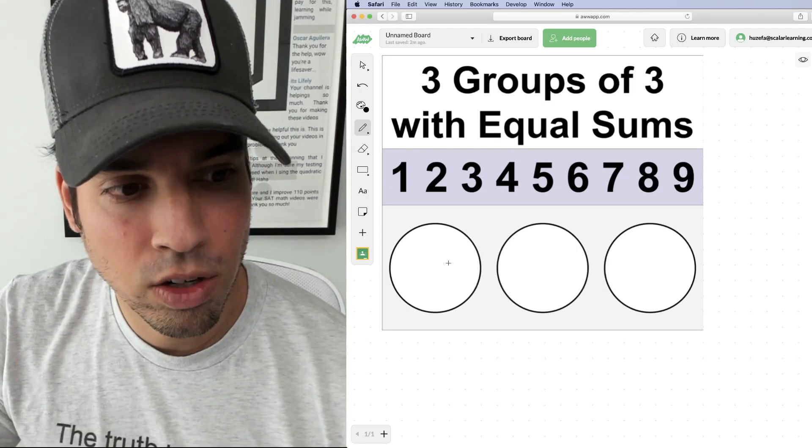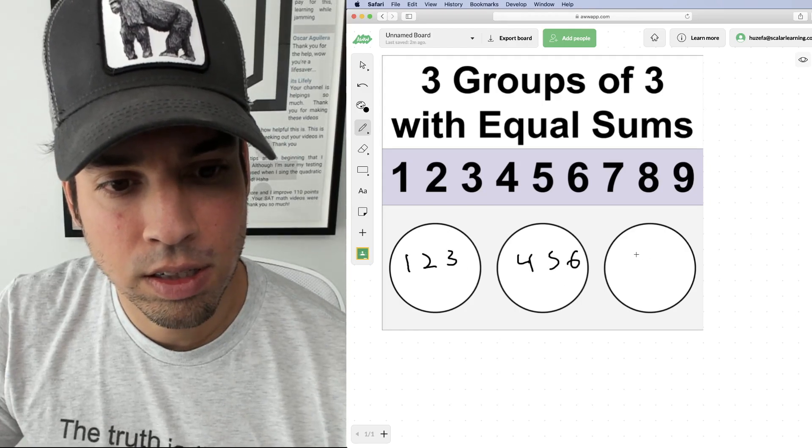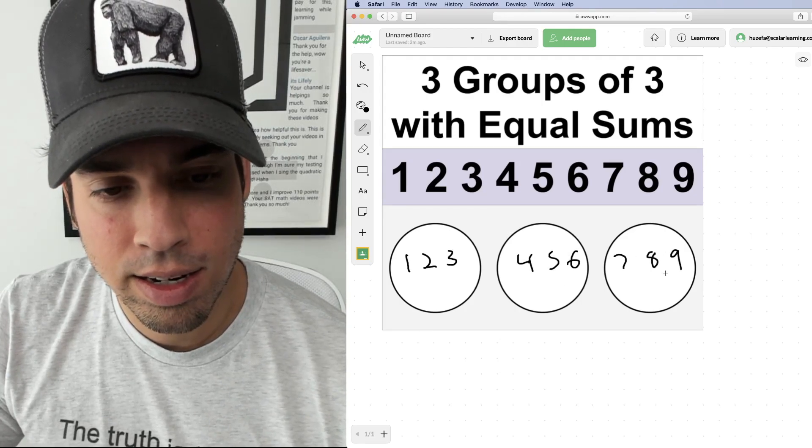For example, I could break these up as one, two, three, four, five, six, seven, eight, and nine.